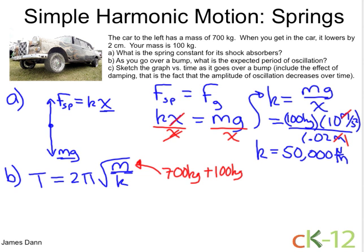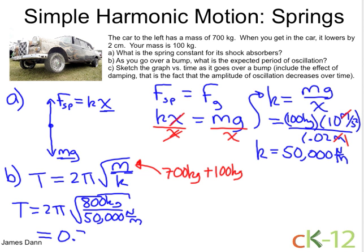So if we plug that in, we get T is equal to 2 pi square root 800 kilograms divided by the spring constant, 50,000 newton meters. And if you work that out, you get a period of oscillation of 0.79 seconds, which for when we do the graph, we'll call 0.8 seconds.